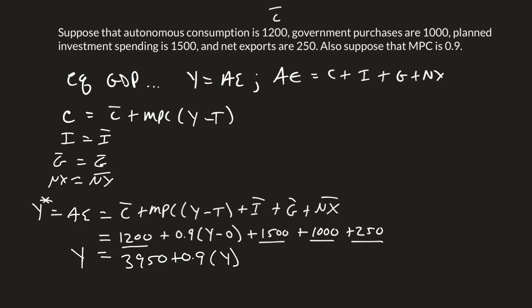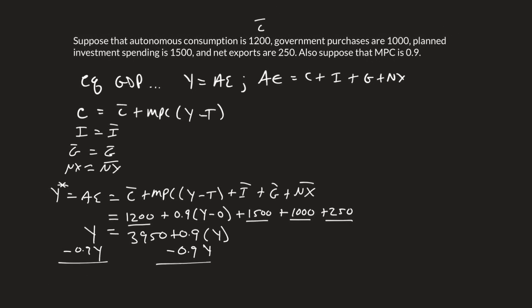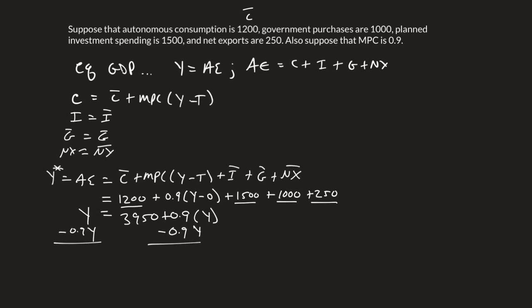And remember, this is equal to that level of Y. So we make sure we get the Y on the left-hand side. We're going to subtract 0.9Y from both sides. Let's make this a little smaller so that we can fit everything on one screen. That's going to cancel. This is going to equal 0.1, right? Because we have one full Y minus 0.9Y.